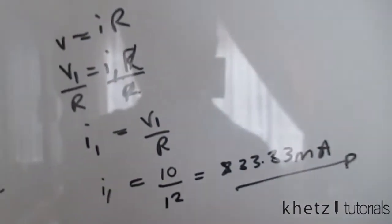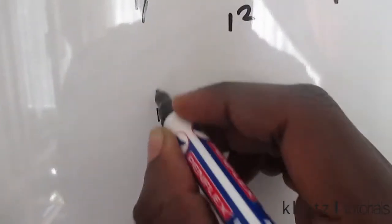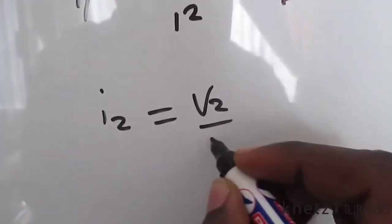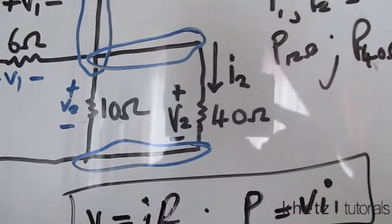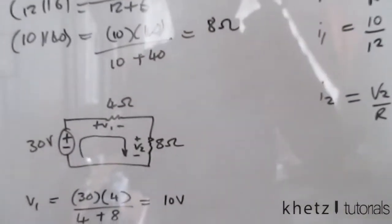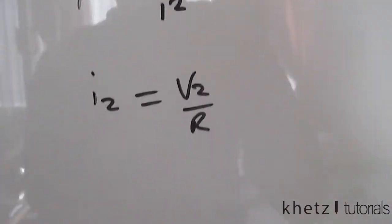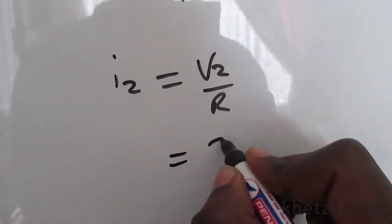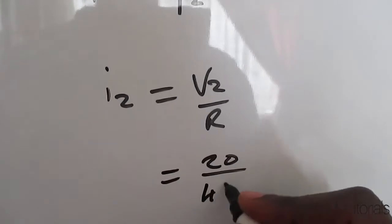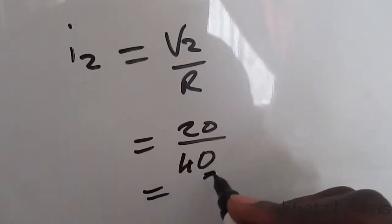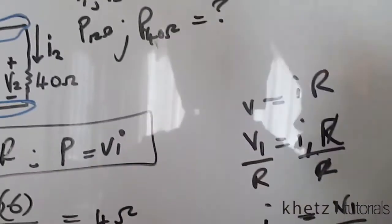Moving on to find i2, we do the same thing: i2 equals v2 divided by R. v2 is 20 volts and the resistor value is 40 ohms, so i2 equals 20 divided by 40, which is 0.5 amperes or 500 milliamperes.